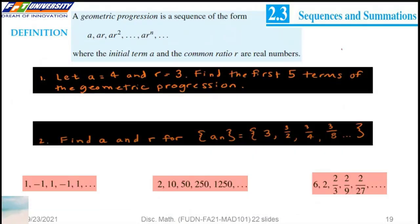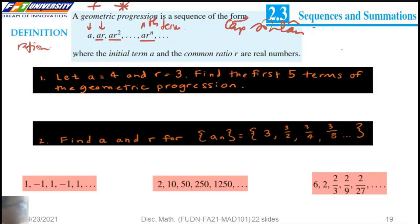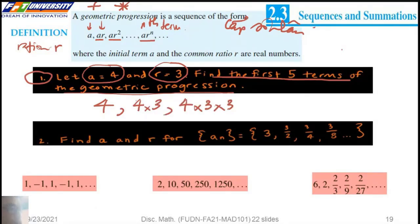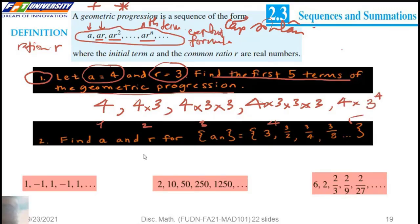A geometric progression is a sequence where the ratio is R. At the N-th position, we multiply by R a total of N times. For example, a geometric progression with first term A equal to 4 and ratio R equal to 3: the first term is 4, the second is 4 times 3, then 4 times 3 squared, and so on up to 4 times the ratio to the power of 4.